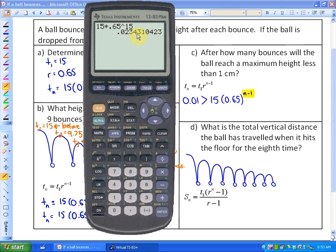That's still more than 1 centimeter, so it's going to be more bounces until that particular time. Let's go ahead and see if it's after 17 bounces. So that would be 0.65 to the power of 17.